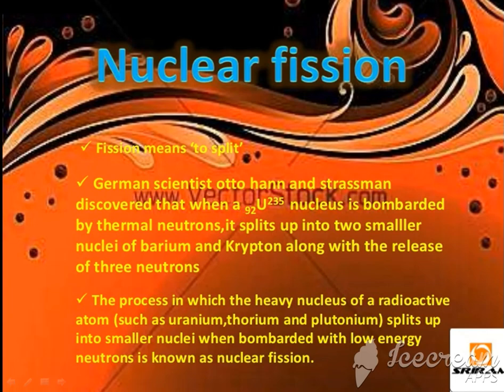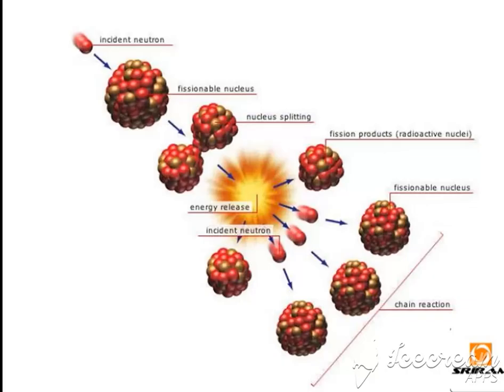Thermal neutrons are low energy neutrons. In fission, low energy neutrons are bombarded onto a uranium nucleus. Uranium is a radioactive element, so after bombarding a neutron into it, that nucleus becomes unstable and breaks up into two different smaller nuclei. This whole process releases a lot of nuclear energy and is known as nuclear fission.